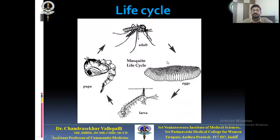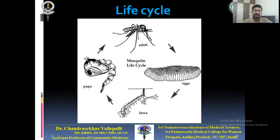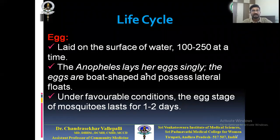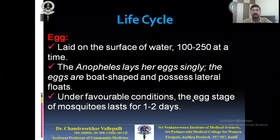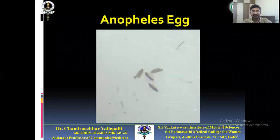The mosquito life cycle goes: egg → larva → pupa (comma-shaped) → adult. In Anopheles, eggs are laid on the surface of water in batches of 100 to 250 at a time. The eggs are laid singly, are boat-shaped, and possess lateral floats. Under favorable conditions, the egg stage lasts about 1 to 2 days.